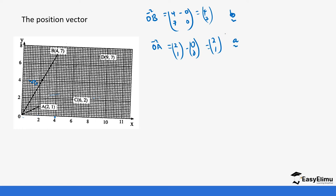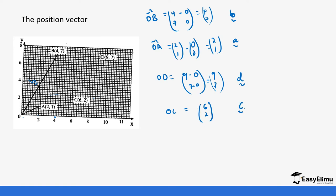You'll notice and see that a lot — whenever you see this, it means it was formed from the position vector. So if you are to get point D, D is (9,7), meaning our OD is going to be (9-0, 7-0) which becomes (9,7). So this will be our small letter d. The same applies with OC — it's going to be (6,2) from the origin, so the vector will be referred to as small letter c.